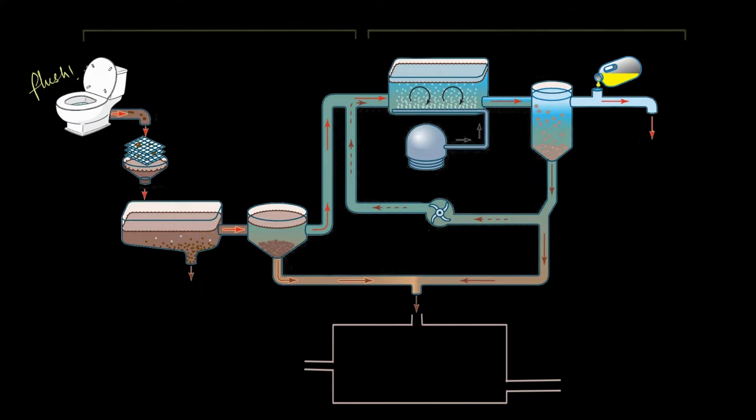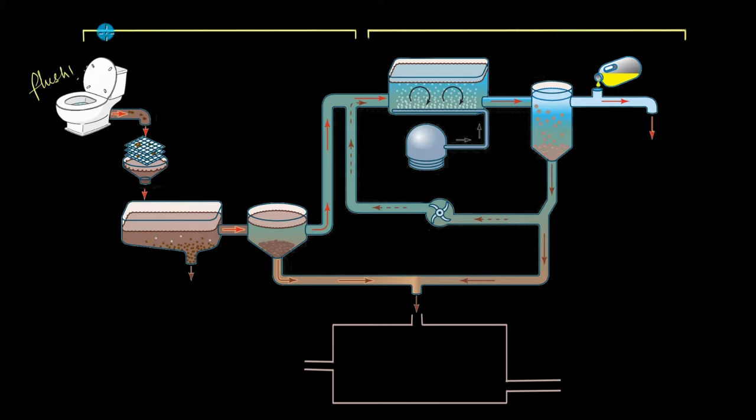There are two major parts in this treatment process: the primary treatment and the secondary treatment. The first one is all about getting rid of physical things like rocks, sand, pebbles and stuff. The second one focuses on removing all the organic matter in the water with the help of microbes. Let's dive a little deeper into each one of these processes and see how they actually work out.